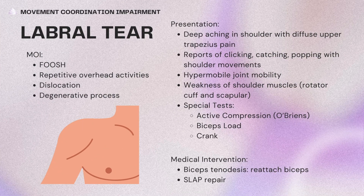Labral tear: mechanism of injury includes a fall on an outstretched arm, repetitive overhead activities, dislocation, and degenerative process. Presentation is deep aching pain in the shoulder with diffuse upper trap pain, reports of clicking, catching, and popping with shoulder movements, hypermobile joint mobility, and weakness of shoulder muscles. Special tests include active compression (O'Brien's), biceps load, and crank test. Medical intervention is a biceps tenodesis to reattach the biceps, or a SLAP repair.